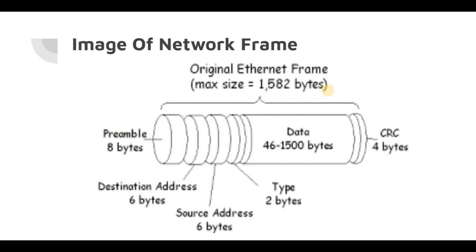Looking at this image, we can see the frame size is 1582 bytes. The major component is the data bytes — the maximum data it can carry is 1500 bytes. The remaining 82 bytes is used to store frame information such as destination address, source address, CRC, and a few other components. These remaining bytes vary from vendor to vendor, which is why the total frame size also varies, but the payload data of 1500 bytes remains constant for most vendors.